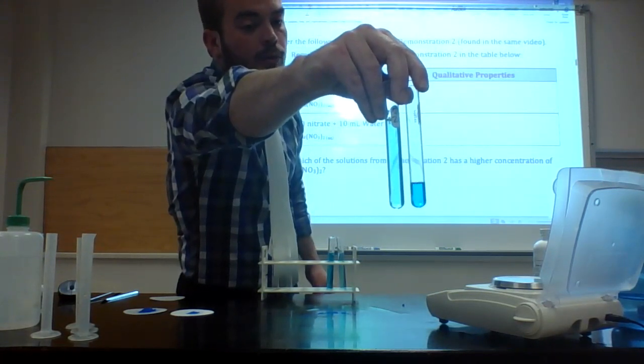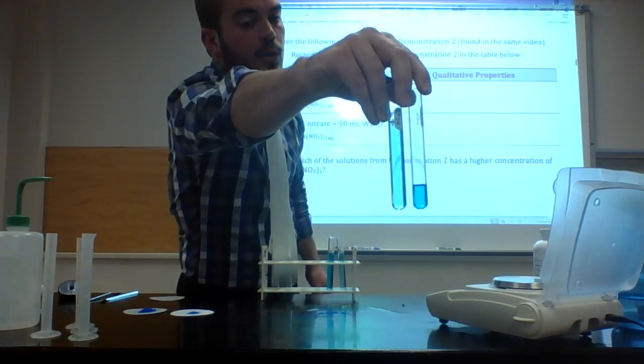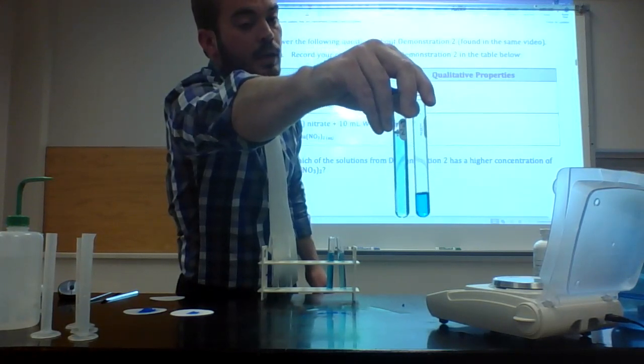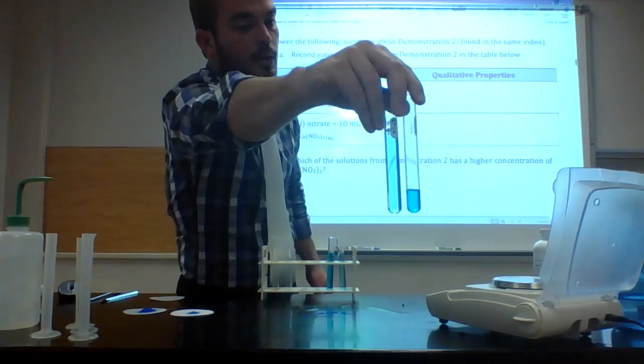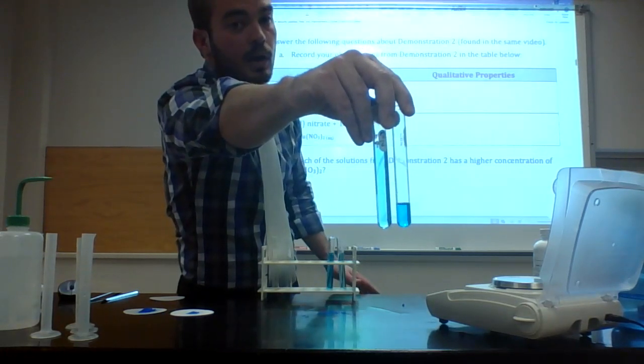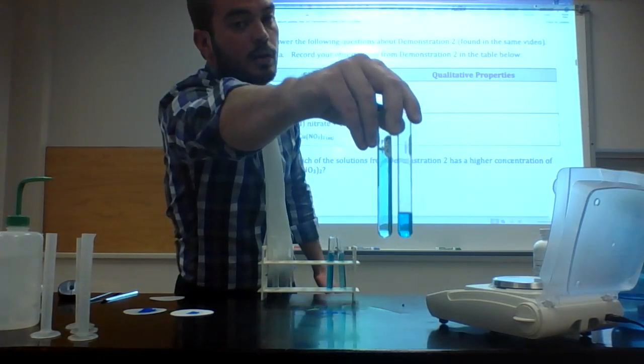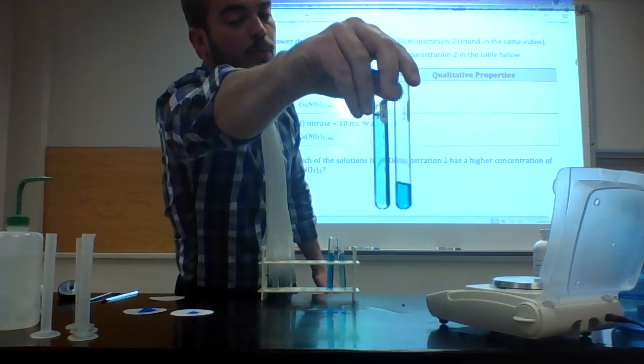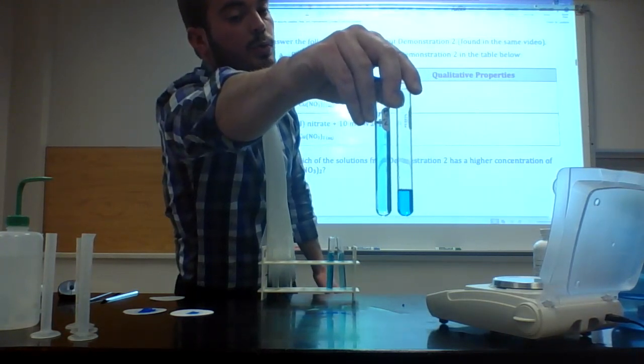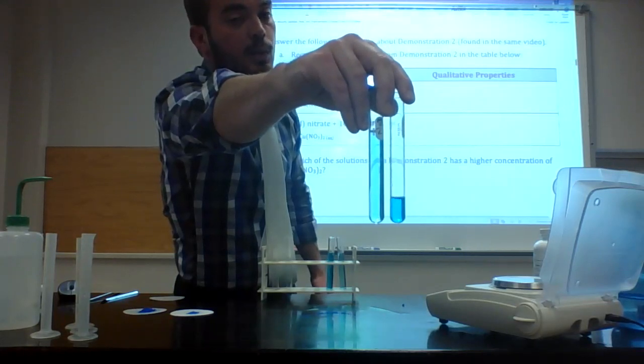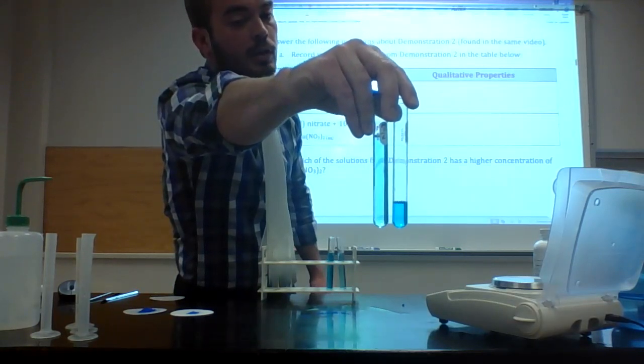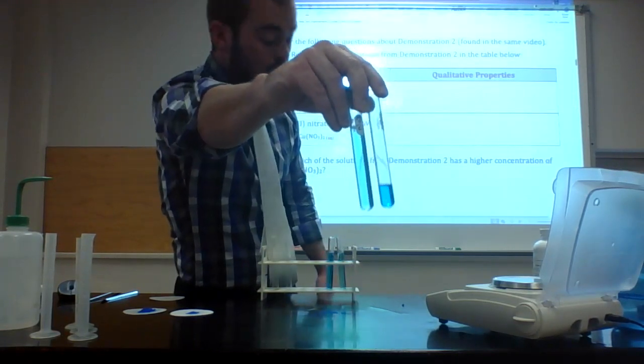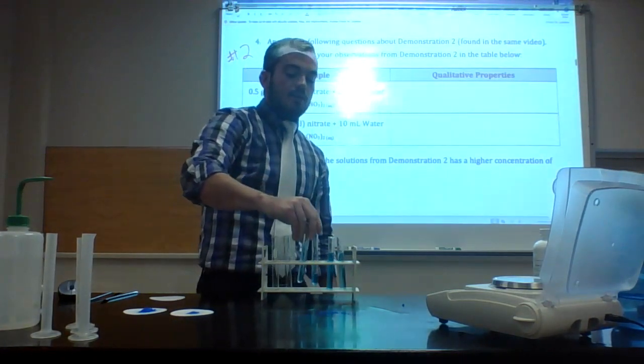Here we have our two solutions. The one on your right is 0.5 grams of copper(II) nitrate with 2.5 milliliters water. The one on your left is 0.5 grams of copper(II) nitrate, the same amount of solid, but in 10 milliliters water. Once again not super noticeable, but the solution on your right with less water is a darker shade of blue. So in this case, the one with less water has a higher concentration.